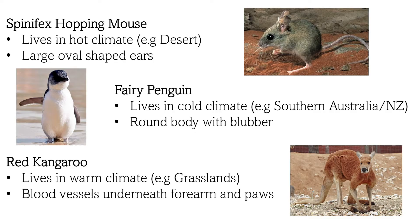The fairy penguin, also known as the little penguin, lives in the cooler climates of South Australia and New Zealand. Like all penguins, their round body contains a layer of blubber — thick fat that helps keep them warm in cold water. The red kangaroo is the largest species of kangaroo, found in arid grasslands, shrublands, deserts and open savannah woodlands. They have many blood vessels under their forearms and paws, which encourages heat loss via convection to keep their core body temperature within a narrow range despite the hot ambient surroundings.